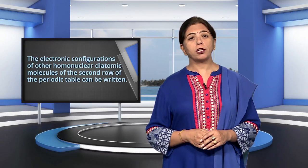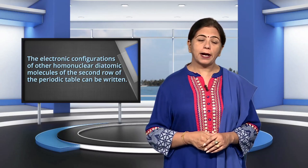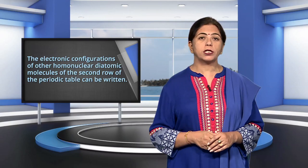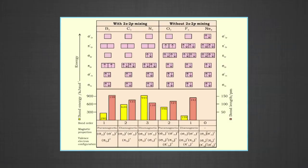Similarly, the electronic configurations of other homonuclear diatomic molecules of the second row of the periodic table can be written. In the figures given below, the molecular orbital occupancy and molecular properties for boron through neon molecules are shown, including bond energy, bond length, bond order, magnetic properties and valence electron configuration. From these diagrams, you can predict and calculate the bond order and predict bond length and stability.